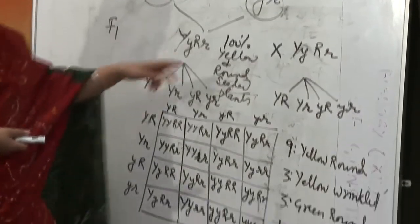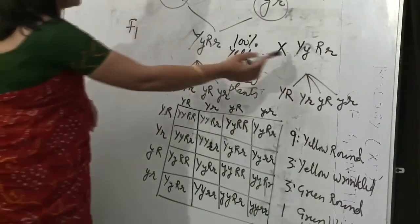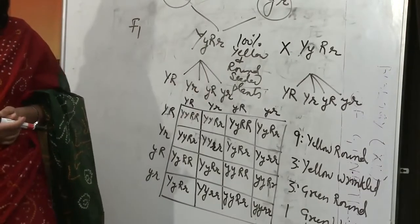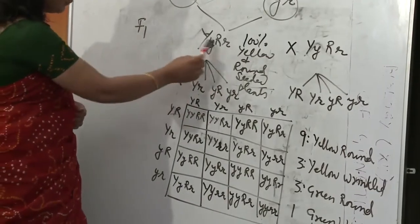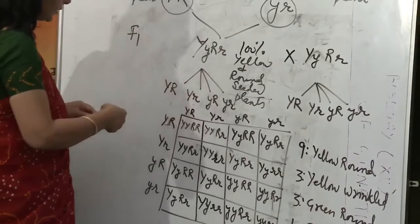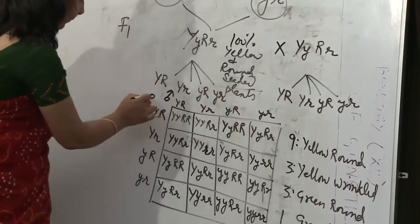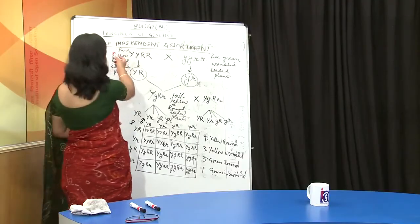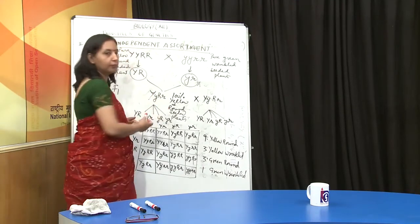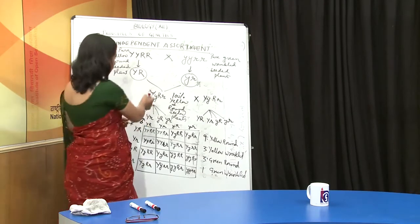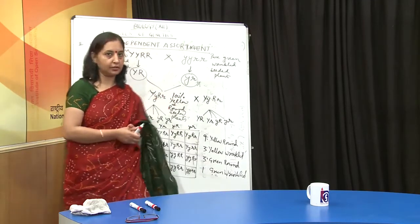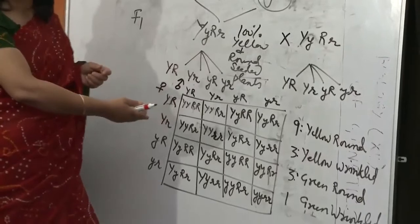In order to get the second generation, we do self-pollination with capital Y small y, capital R small r. The types of gametes formed are: capital Y capital R, capital Y small r, small y capital R, and small y small r. These may be considered male gametes and similarly female gametes. As per the law of independent assortment in a dihybrid cross, all possible combinations are found in the progeny because one pair of alleles is independent of another pair of genes. There is no mixing, and all possible combinations are found in the progeny.